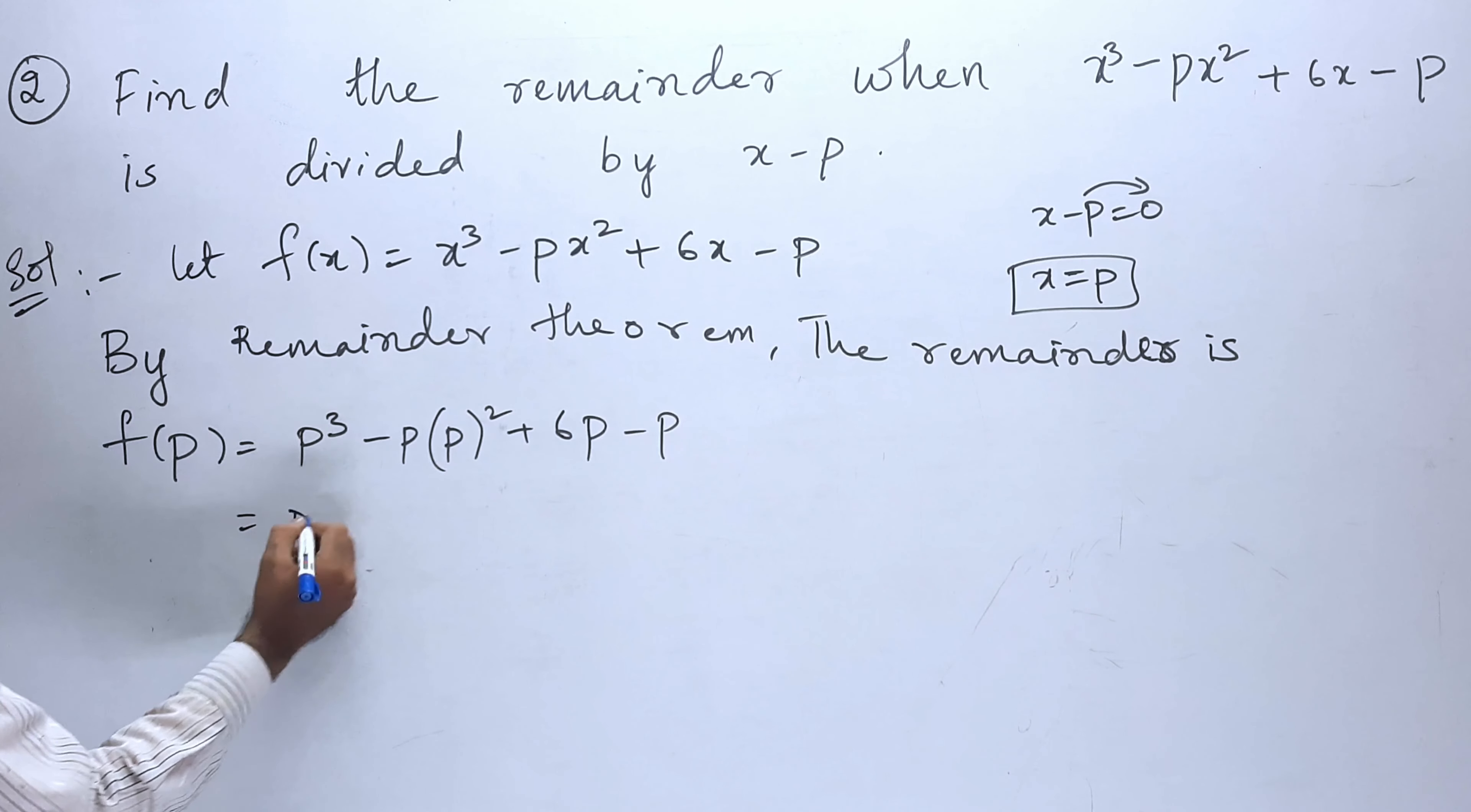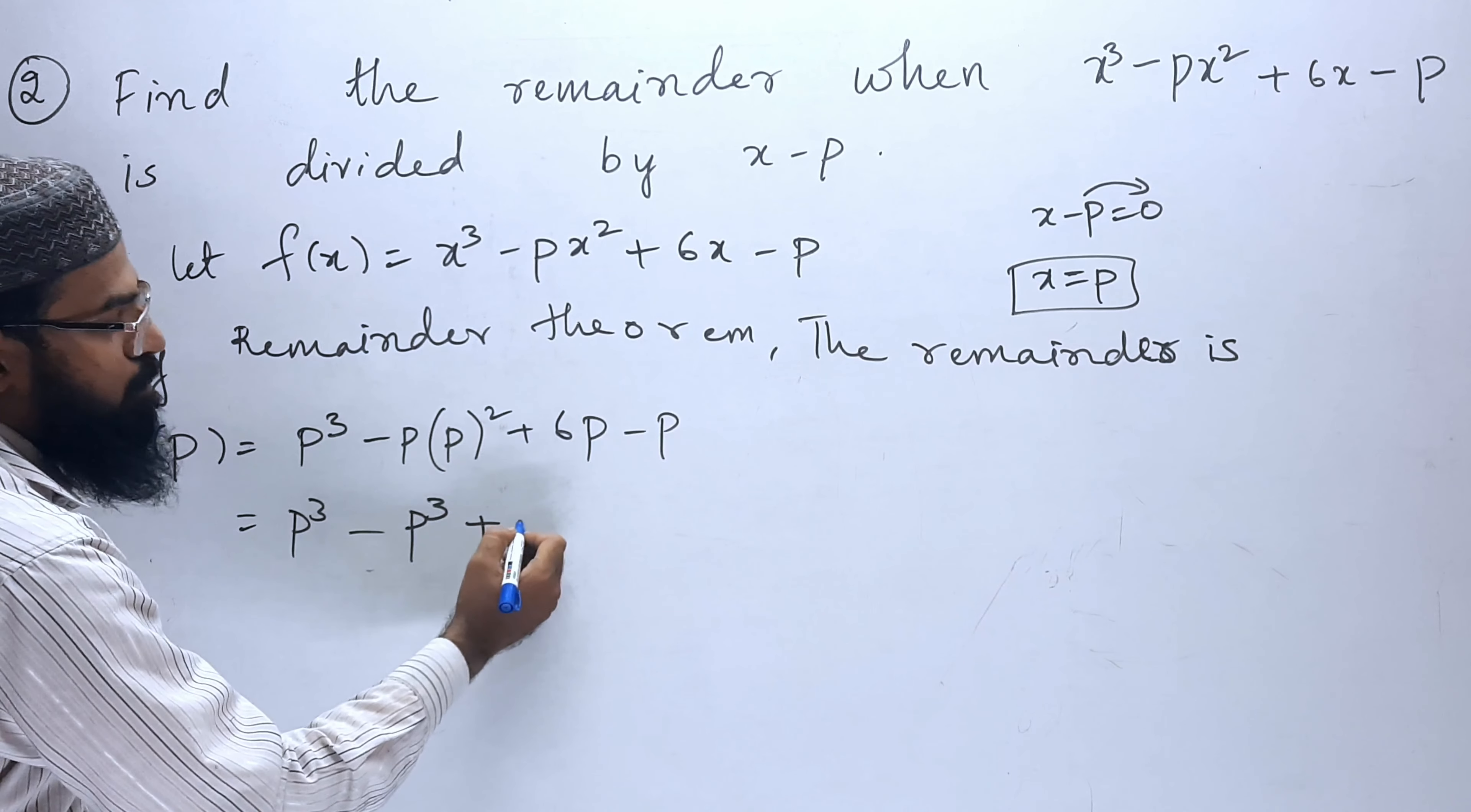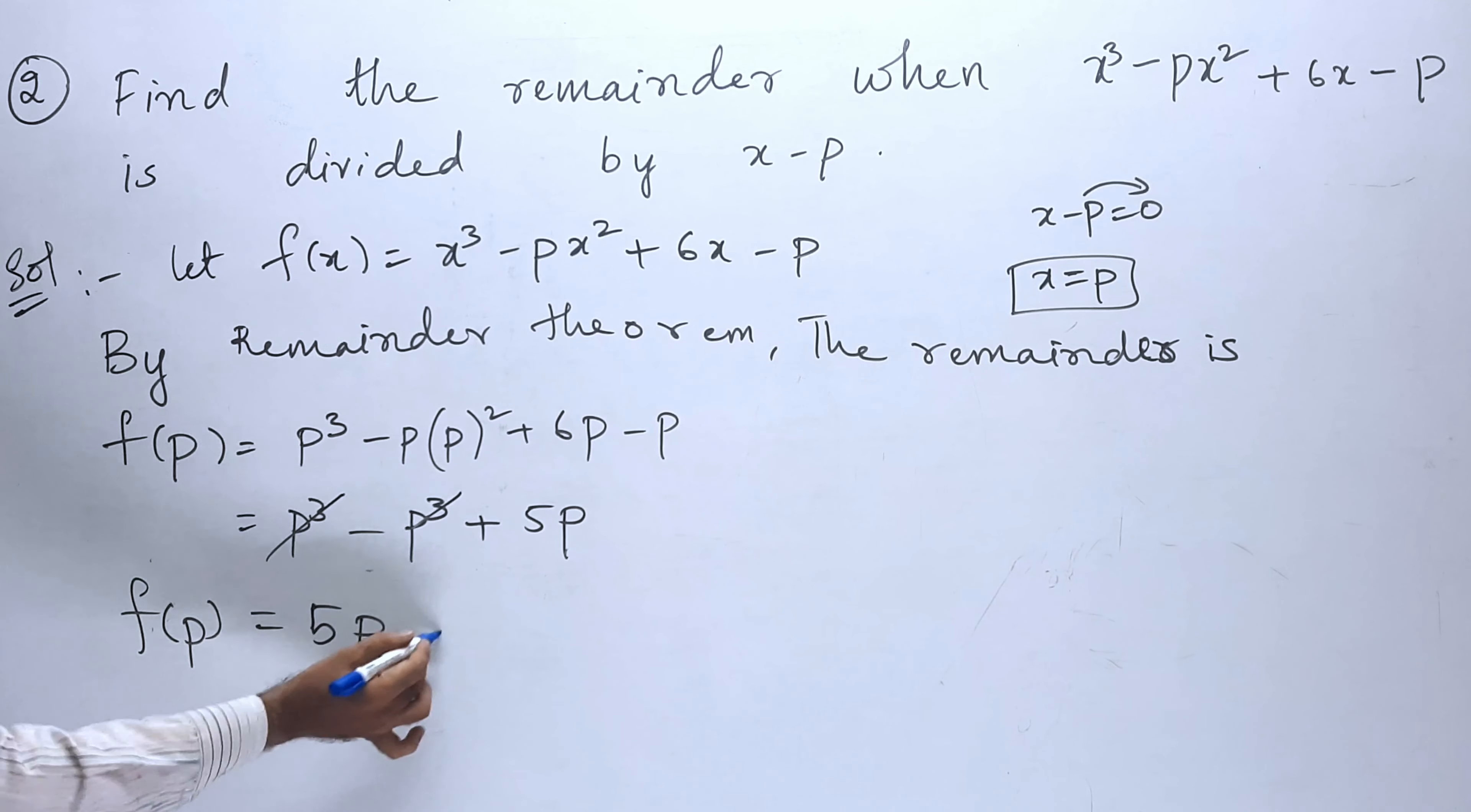p cube minus p into p square, that will be p cube, plus 6p minus p. 6p minus 1p, that is 5p. p cube minus p cube. Now, the answer is 5p. f of p equals 5p.